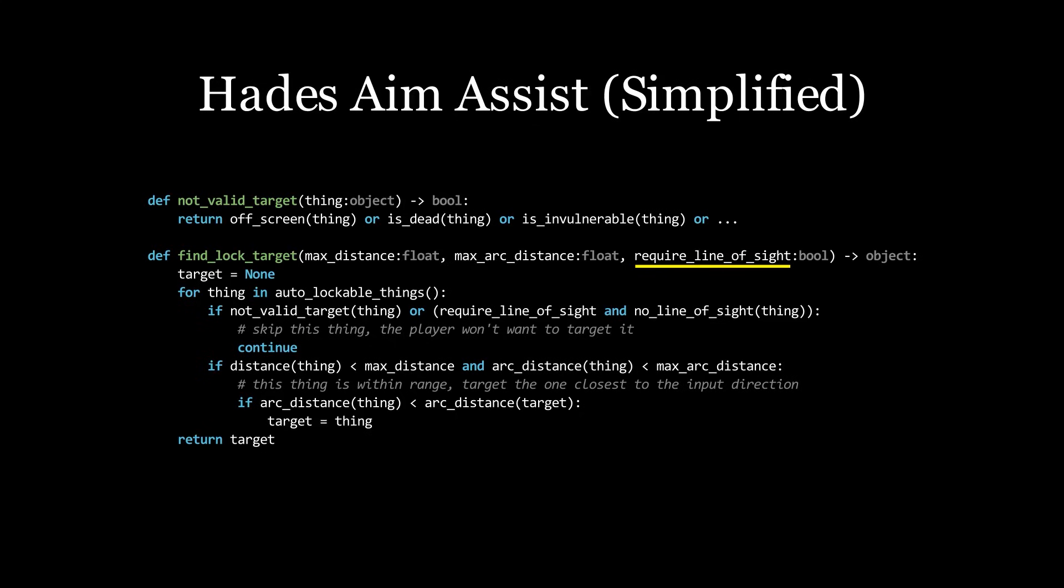Weapons which require line of sight will only snap to targets that have line of sight. Weapons won't snap to enemies that are off-screen, that are currently invulnerable, or that are outside of the range of the player's attack. For each potential target, the game uses the current gameplay context to make its best estimate of whether that target is valid for aiming or not.